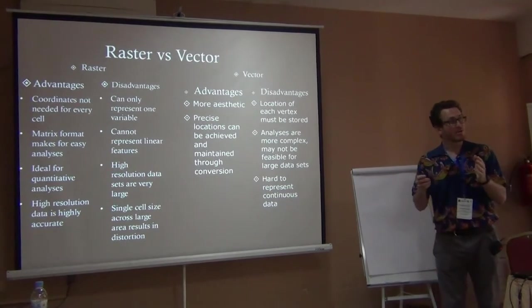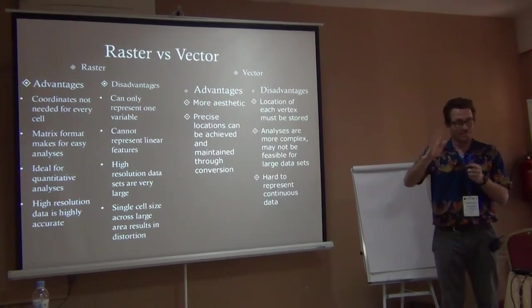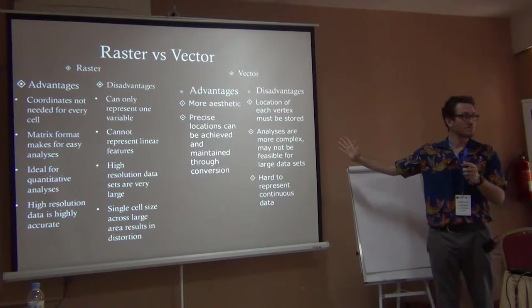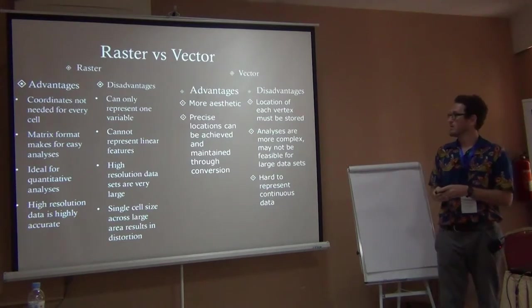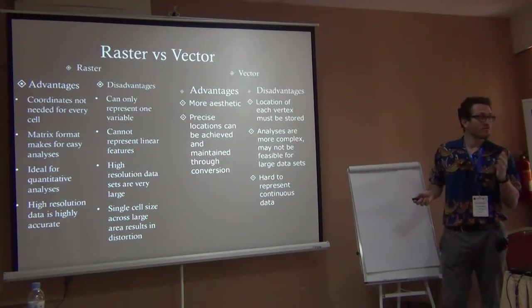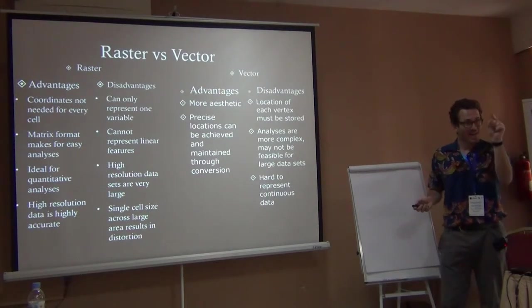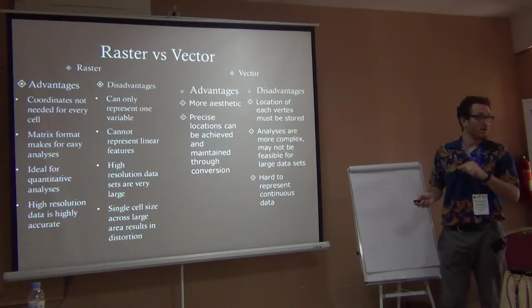Whereas with vector, as I showed in the table, you can have an infinite number of columns with different variables for the same area of land. However, you can't really represent linear features very well because you have these blocks — you can't outline a feature in detail.